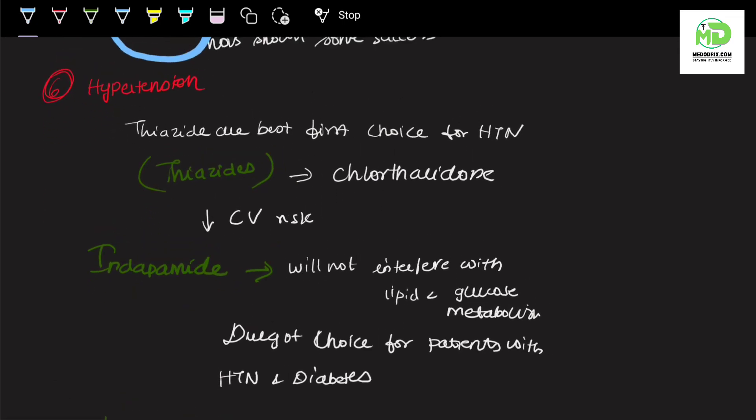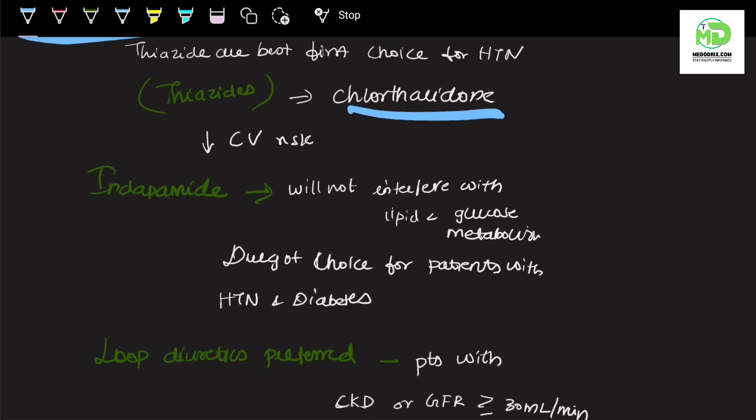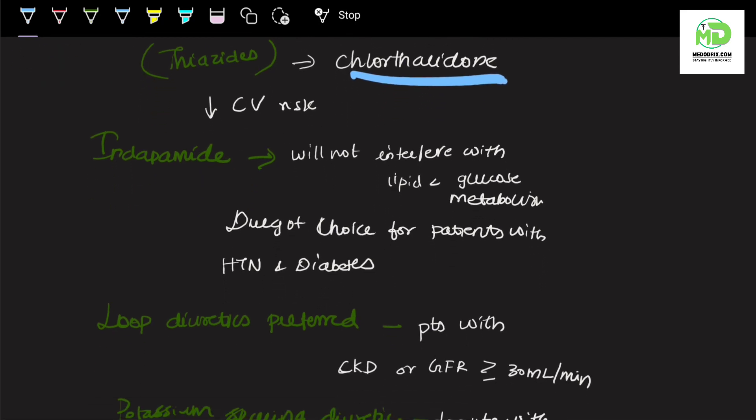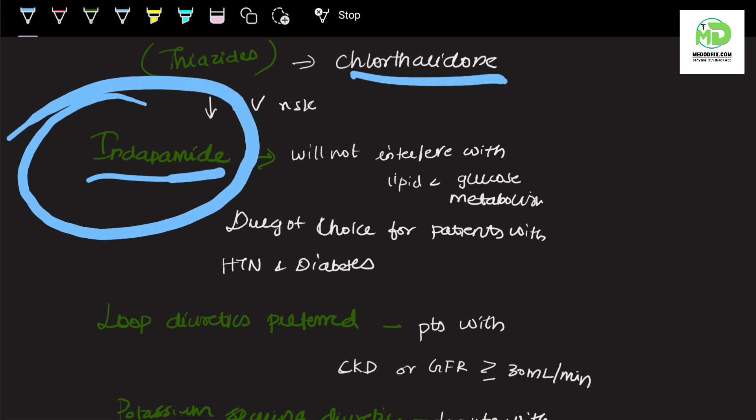The sixth condition is hypertension. The most common first-line is thiazide, which is the best first choice for hypertension, example chlorthalidone, because it has reduced cardiovascular damage risk. Indapamide will not interfere with lipid and glucose metabolism. Remember, indapamide will not interfere with glucose metabolism, thus this drug is a choice in patients with hypertension and diabetes.